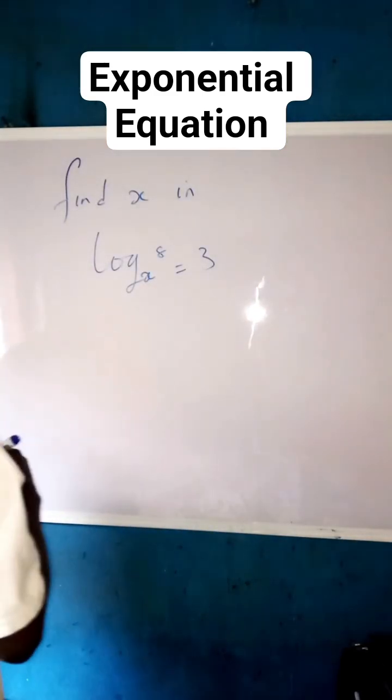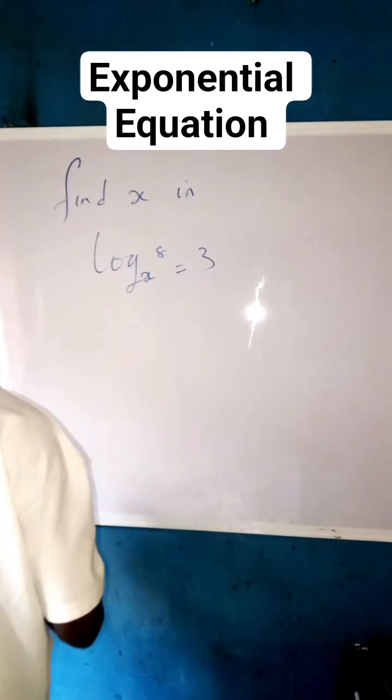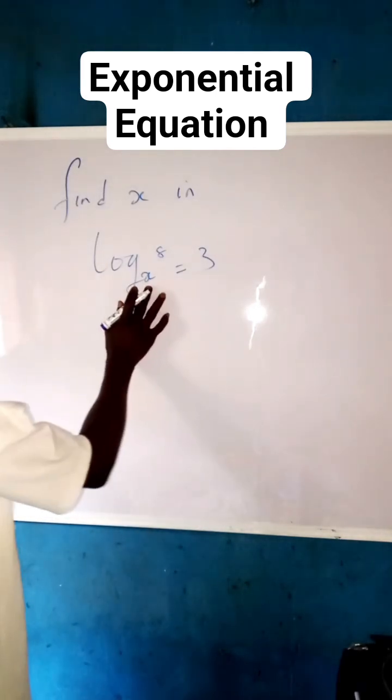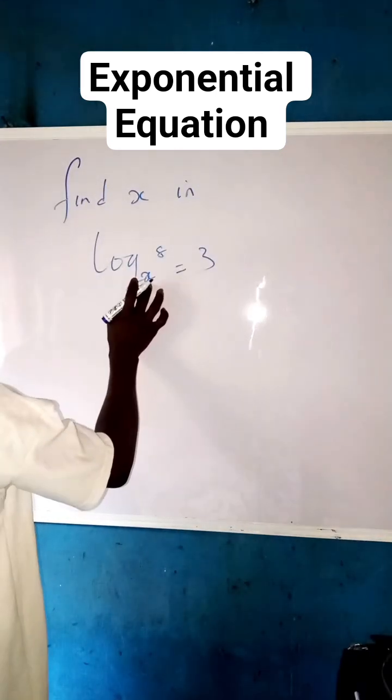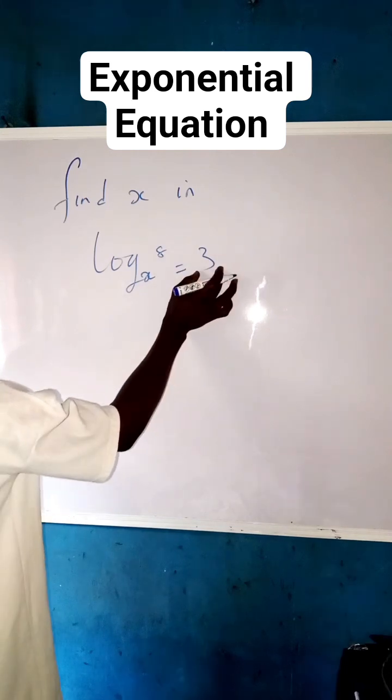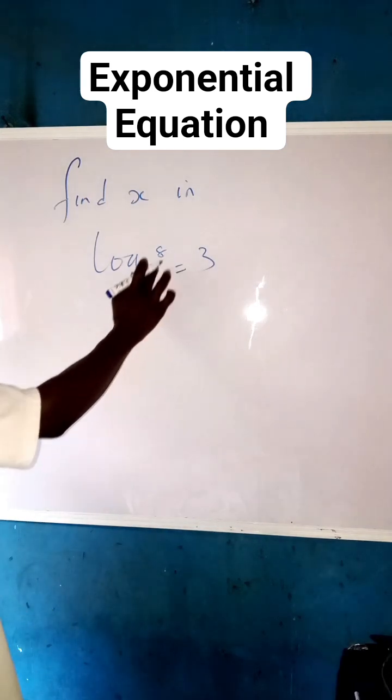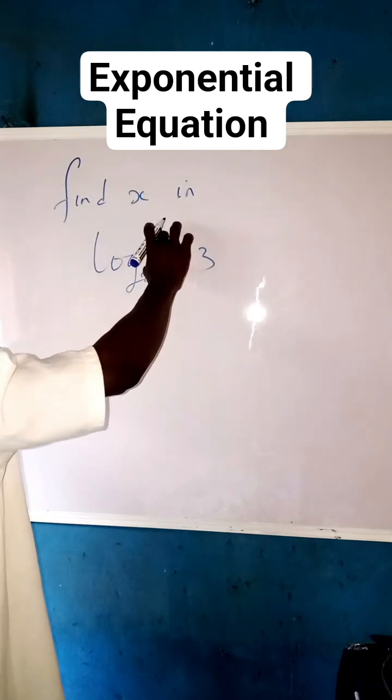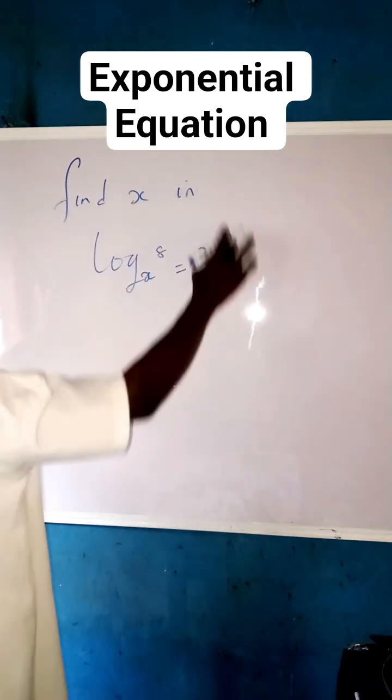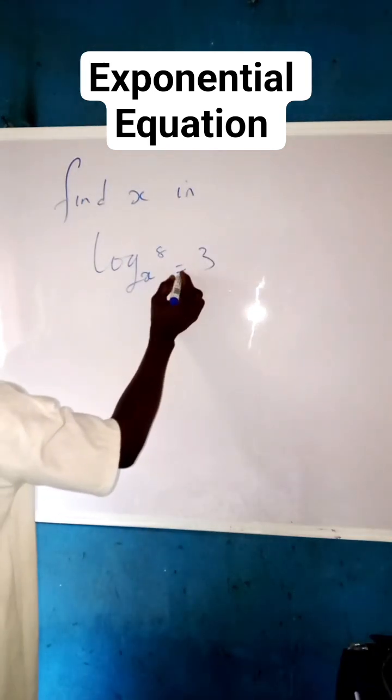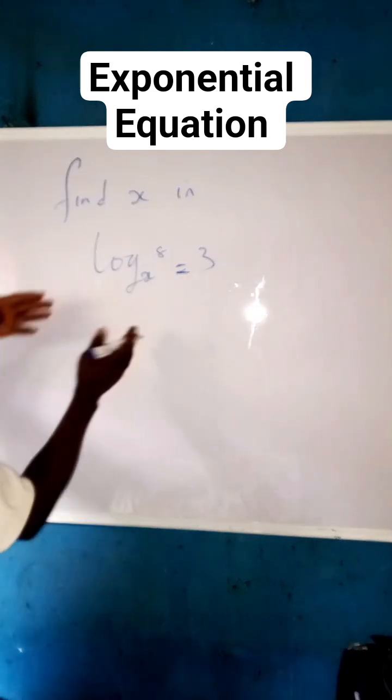Now, what we're going to do first of all is apply the law of logarithm and indices. Whenever I see a thing like this, this x here will become a base, and this 3 after this equal to will become a power to the base of this x. Then this power here, or the number of this x will become a base. This is what we're saying.